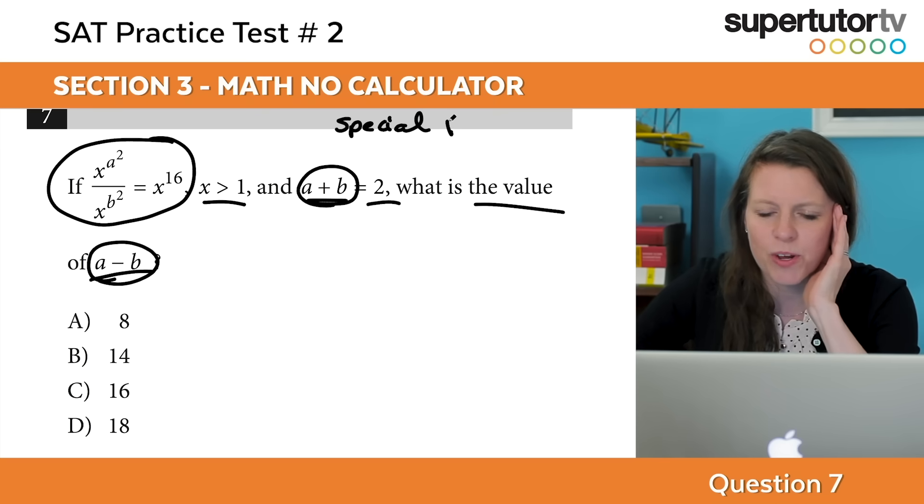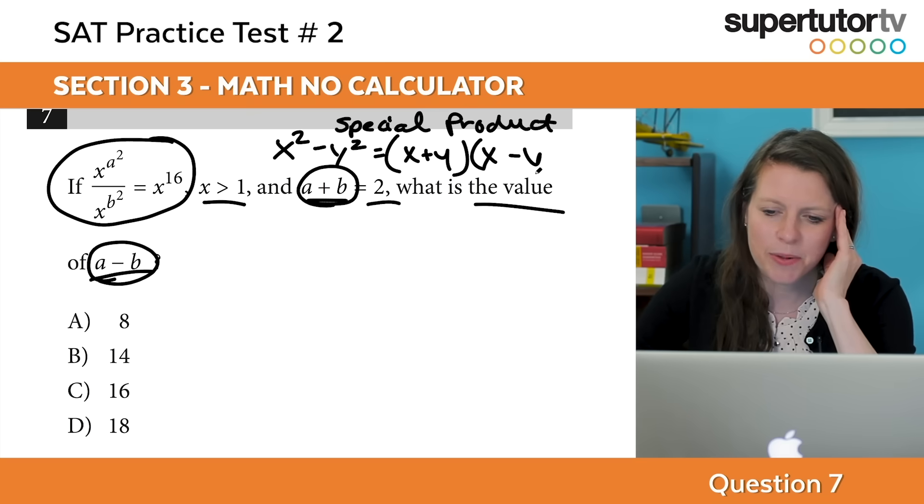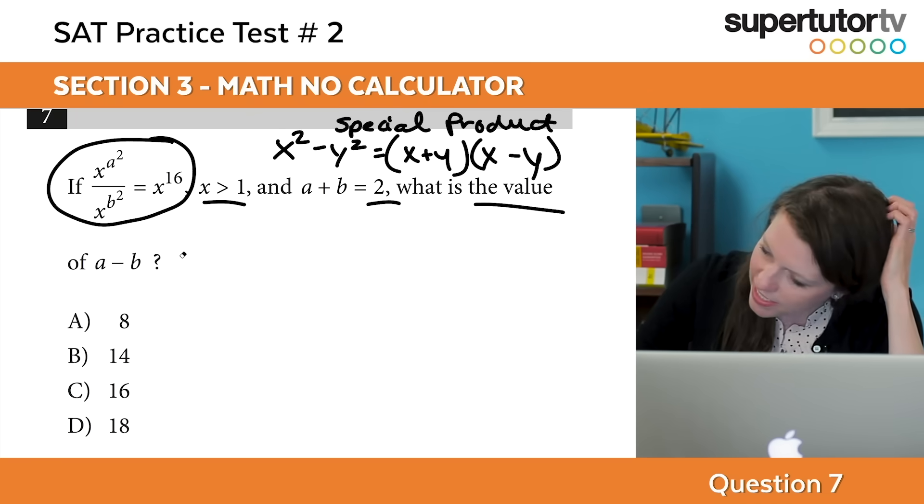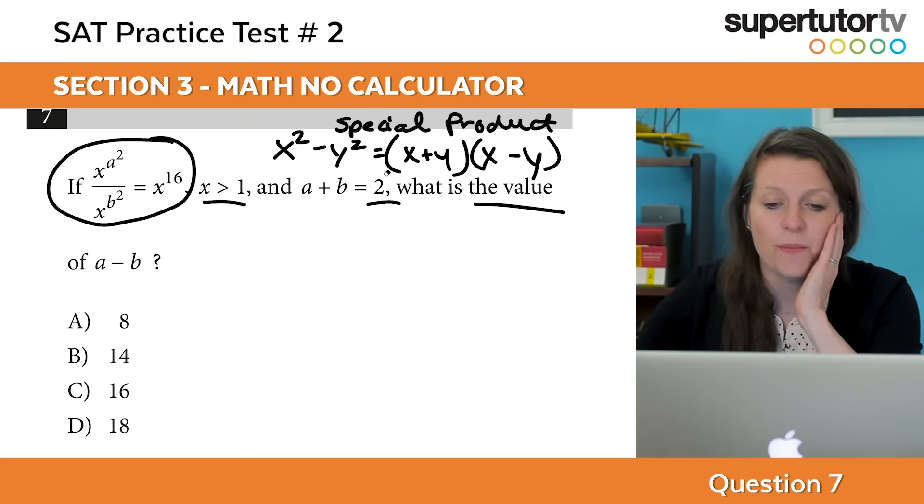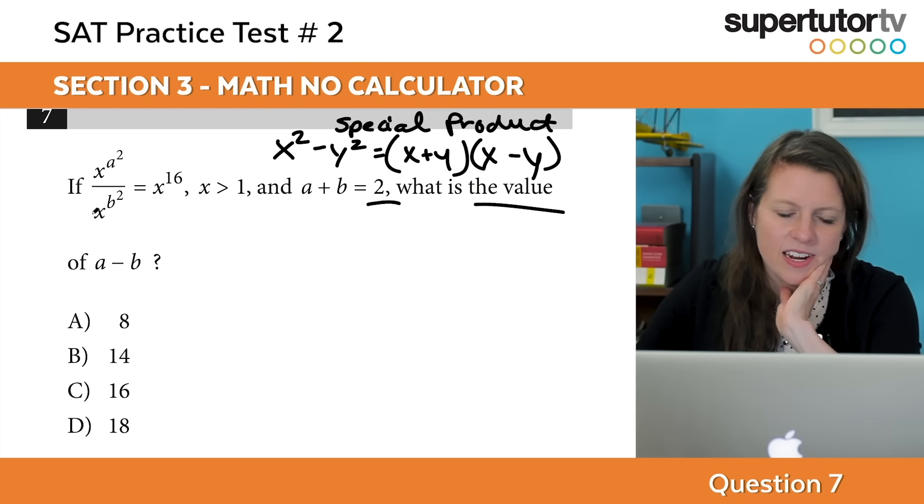This is going to involve special products because we have a plus b and a minus b. When I see those two together I'm thinking of the difference of squares which says that x squared minus y squared equals x plus y times x minus y. Whenever I see that pattern I think to that special product. Make sure you review your special products.